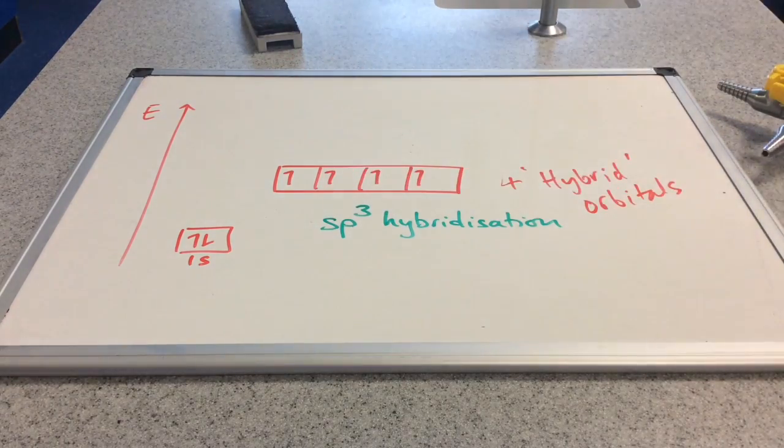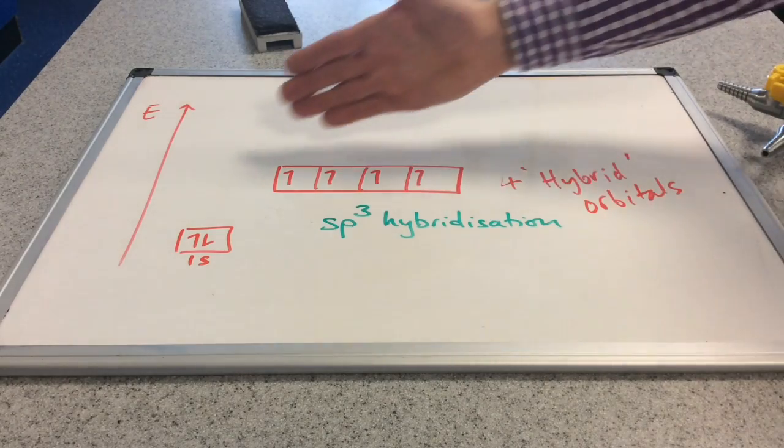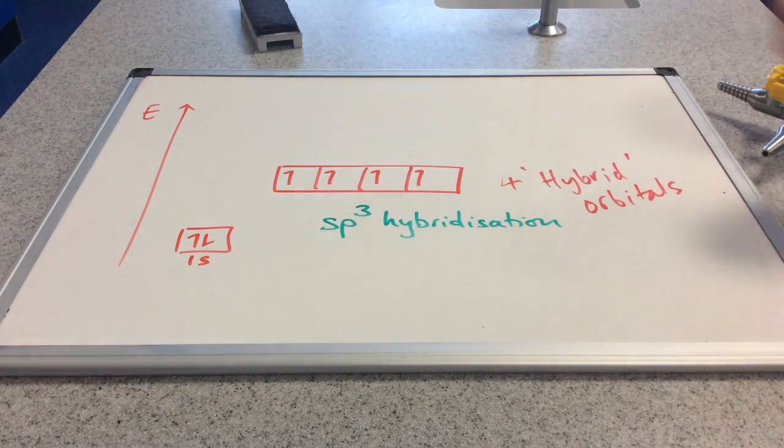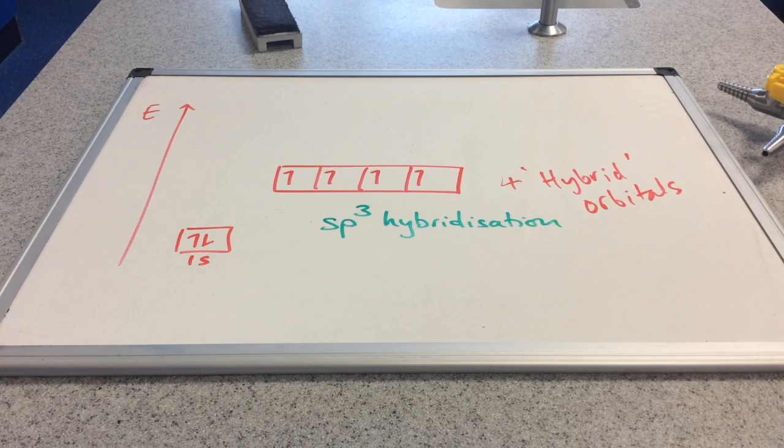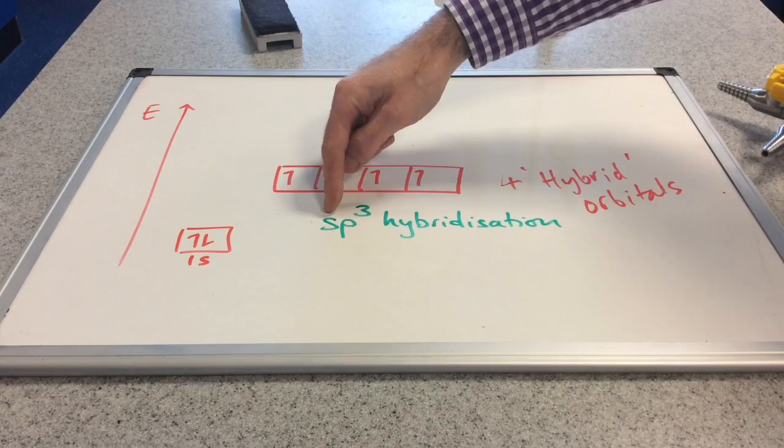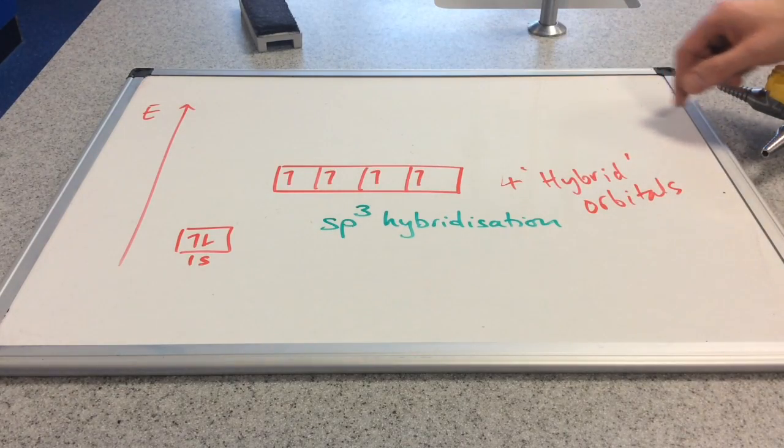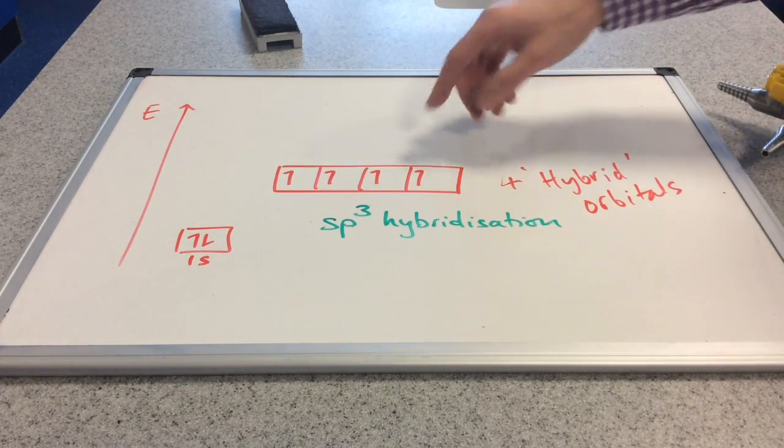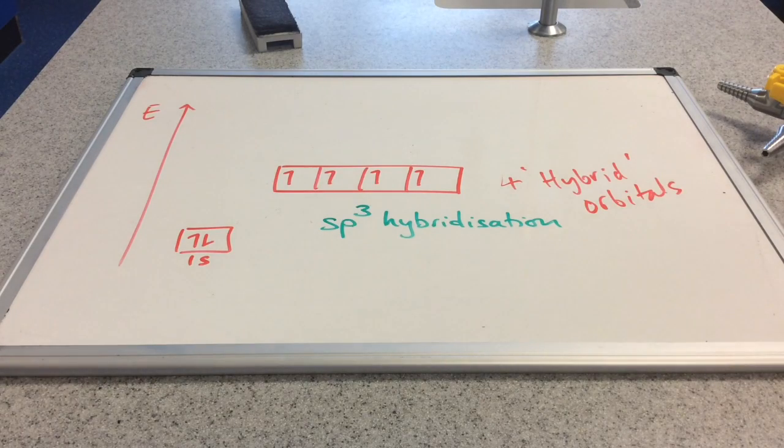So sp3 hybridisation. They all have the same energy, and they're all identical in shape, whereas before the single s orbital on its own would have a spherical shape, and the three p orbitals originally had that lobe shape.